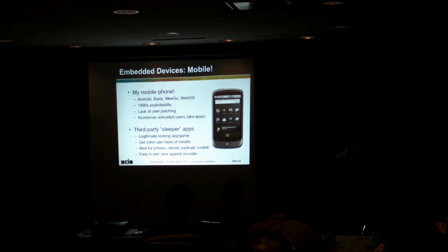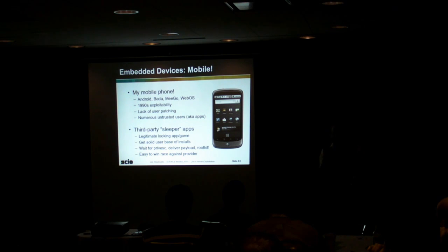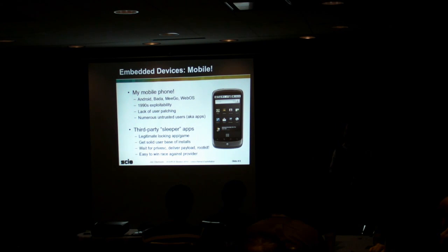These phones are essentially multi-user systems where all of the users are potentially untrusted applications. Every app on Android is installed as a different UID and GID, which means a malicious party can develop an app that looks like a game or legitimate application, perform its usual functionality, and occasionally query the network to see if there's a new exploit available. As soon as an exploit comes around, the sleeper app downloads and executes it to rootkit the phone — way faster than T-Mobile can notice and push out an over-the-air update. It's very easy to win this race, and it's a pretty serious threat for these unprotected mobile devices.